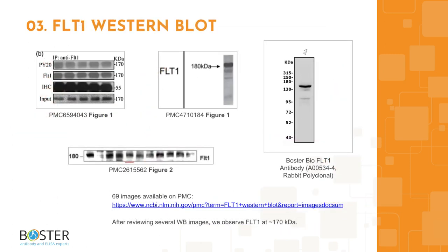Topic 3: FLT1 in Western blotting. Antibody specificity can make or break an experiment. After looking through Western blot images from publications and antibody companies, we can see that typically one band can be expected in a FLT1 Western blot at about 170 kilodaltons. Check out the PMC link for more images, which is also provided in the description box.